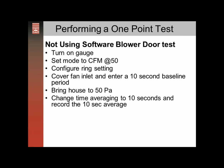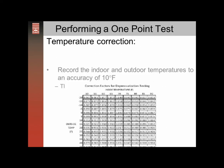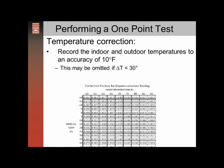Record a 10-second average. Then you'll need to adjust for temperature. Indoor and outdoor temperatures need an accuracy of 10%. Temperature correction can be omitted if the temperature difference between inside and outside is less than 30 degrees.